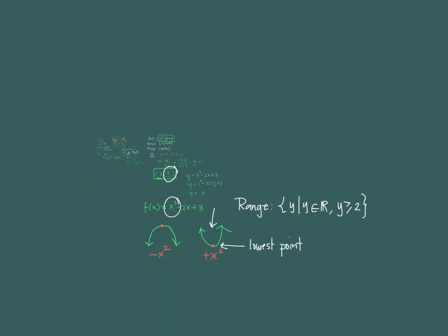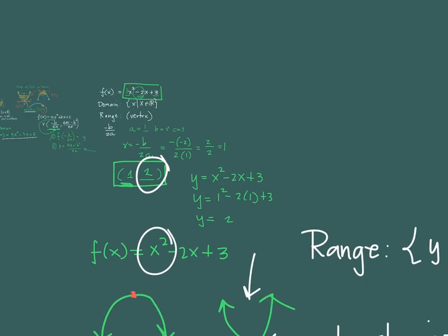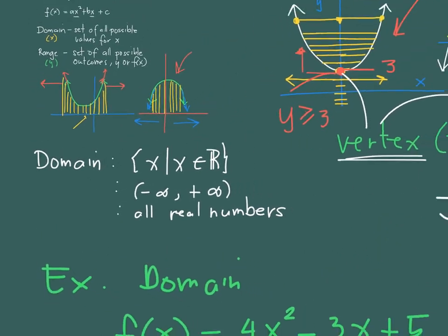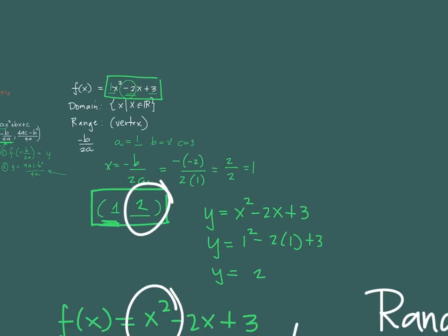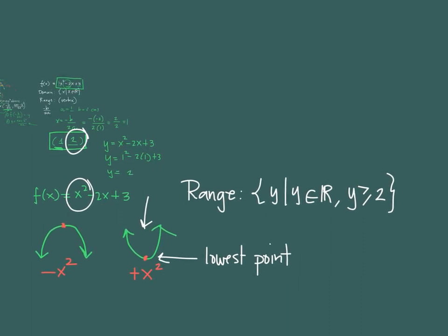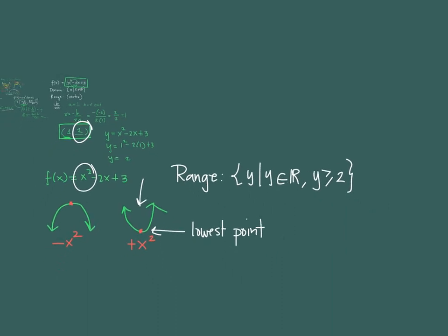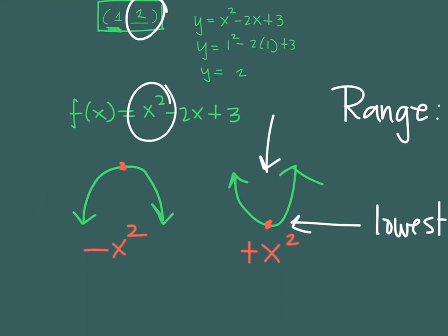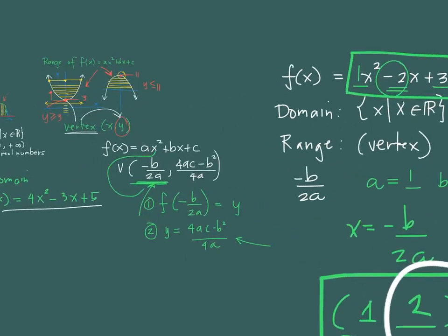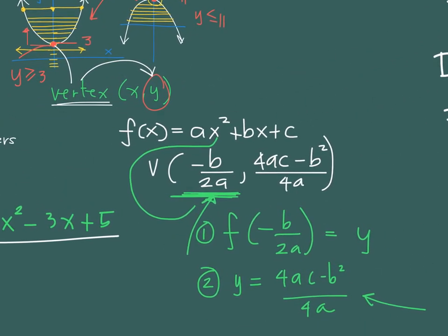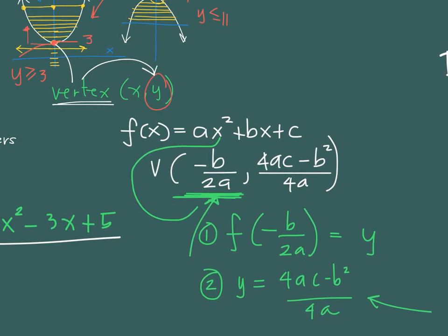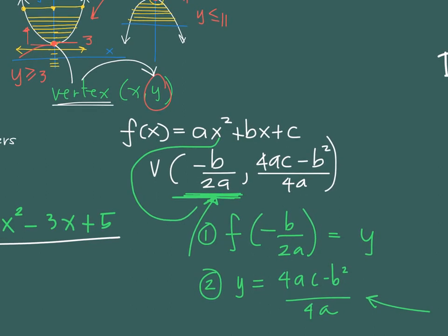That's how you find the domain and the range of a quadratic function. For any quadratic function ax squared plus bx plus c, the domain is the set of all real numbers. For the range, use the y-value of the vertex and determine whether the range is above or below that value, depending on the orientation of the parabola. Always remember the formulas for finding the vertex. In this video we used negative b over 2a, but you can also use 4ac minus b squared over 4a directly.